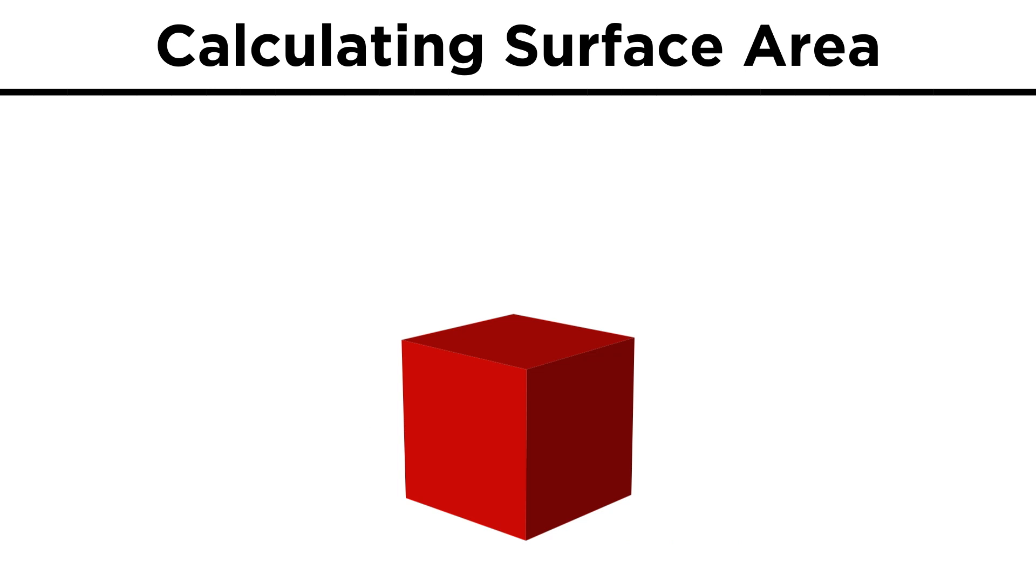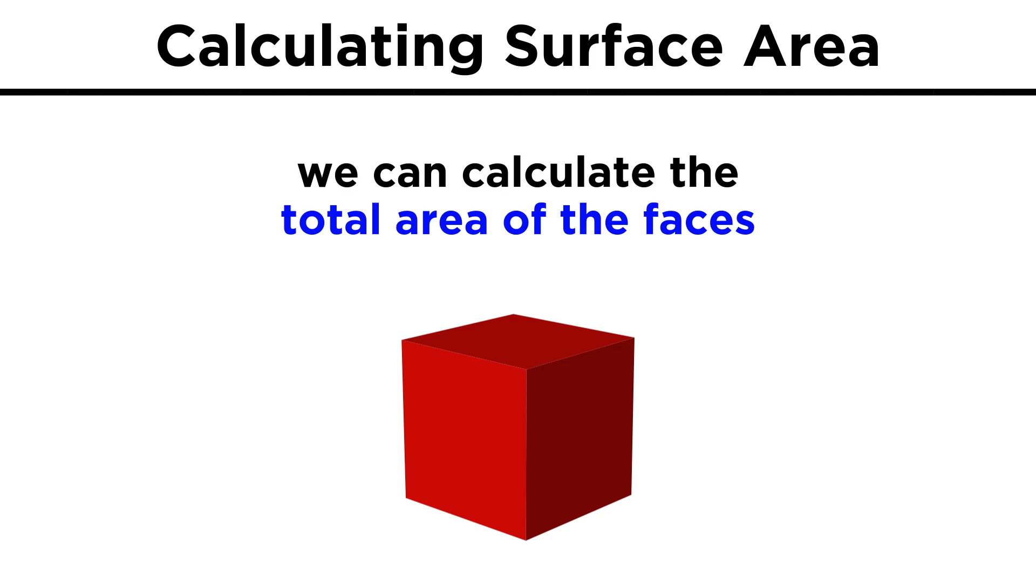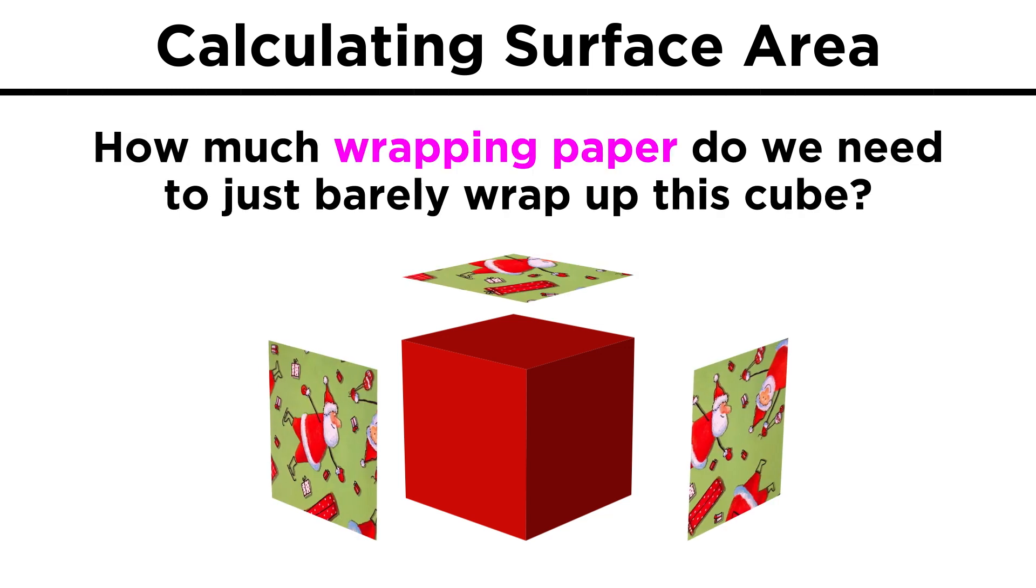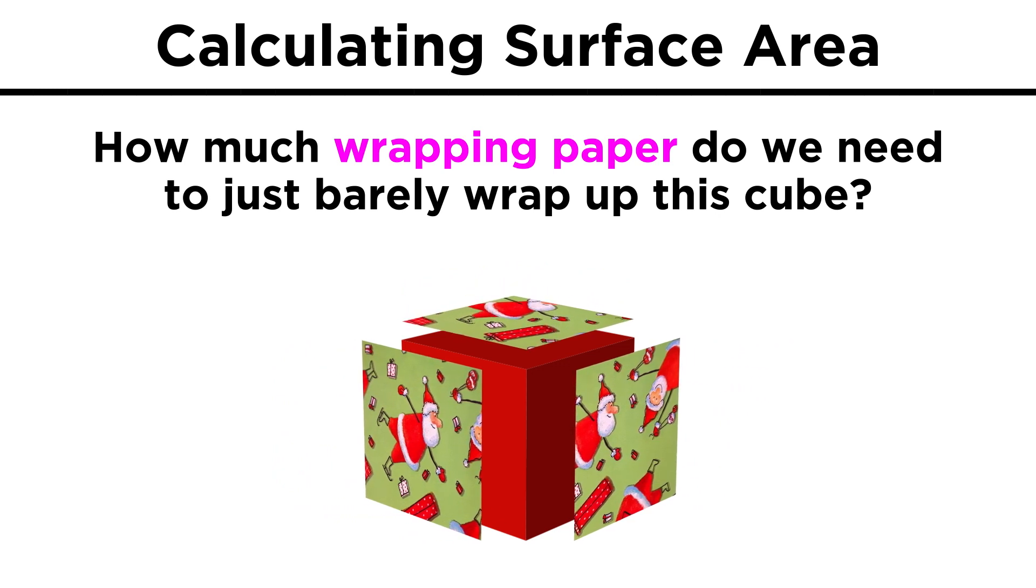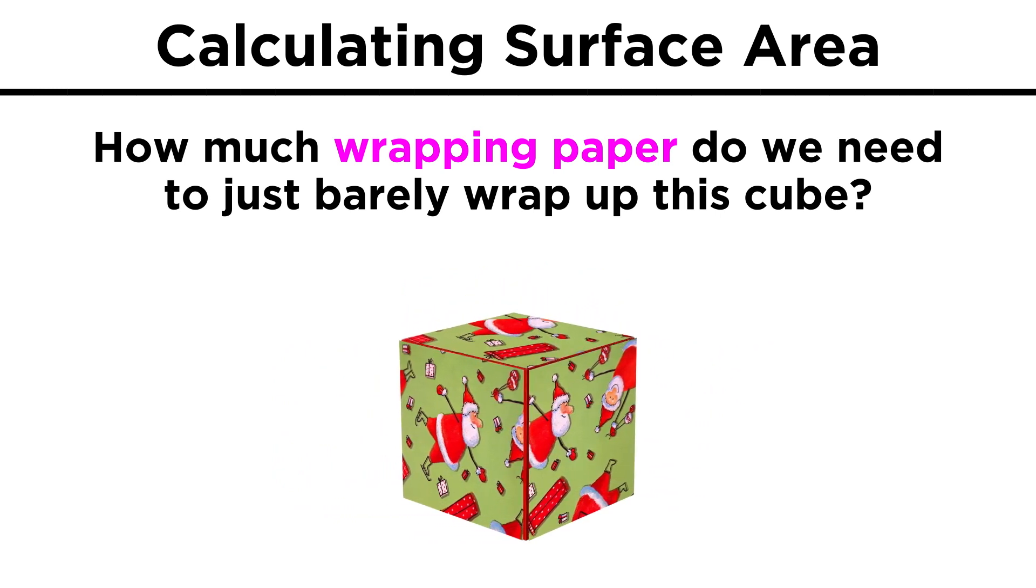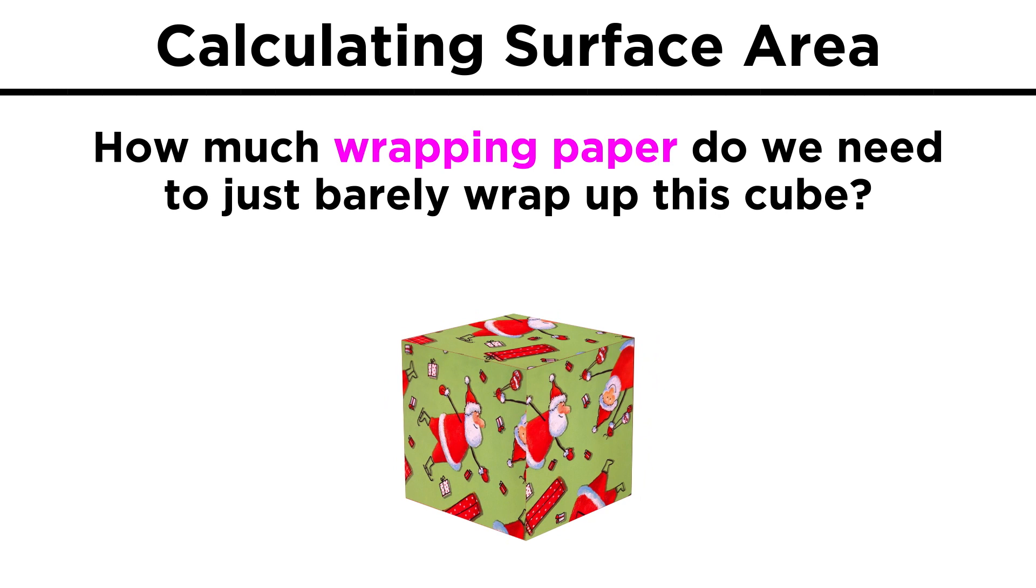Now what can we do with these polyhedra? What can we describe? Well, we know how to calculate the area of certain polygons, so we could calculate the total area of all the faces of a polyhedron. This is called the surface area, quite literally, the area on the surface of a three-dimensional shape, which we can think of as the amount of wrapping paper we would need to wrap up a gift of a particular shape, just barely covering all of it.